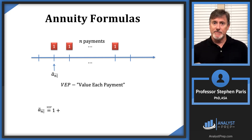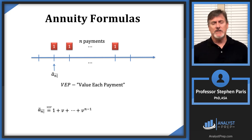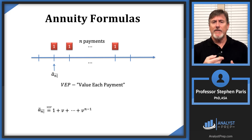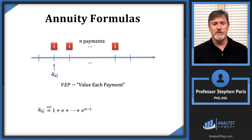The next payment of one is one period after the valuation date, so I need to discount that payment of one back one period by multiplying by v. So I get one plus v. I continue this pattern. The last payment of one is being discounted for n minus one periods, so its value at the valuation date is v to the n minus one. You can recognize that by counting periods, or by looking at the pattern: the first term has exponent zero, the second term v, the third v-squared, so the nth term has exponent n minus one.